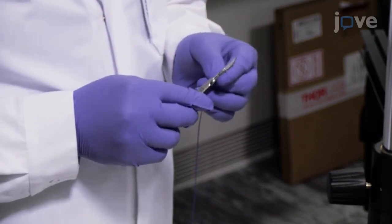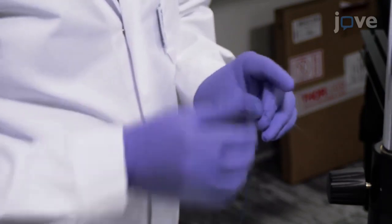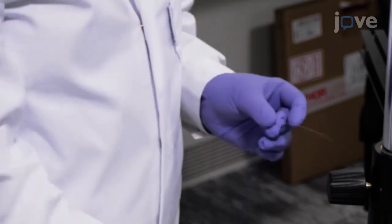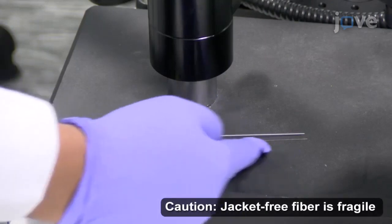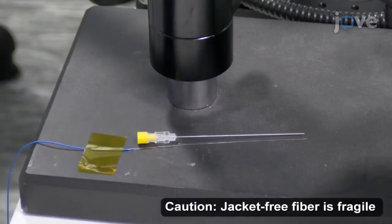Using a scalpel, partially remove the 900 micrometer jacket along the length of the fiber optic hydrophone close to its distal end to expose the buffer layer until the hydrophone can fit within the needle cannula.